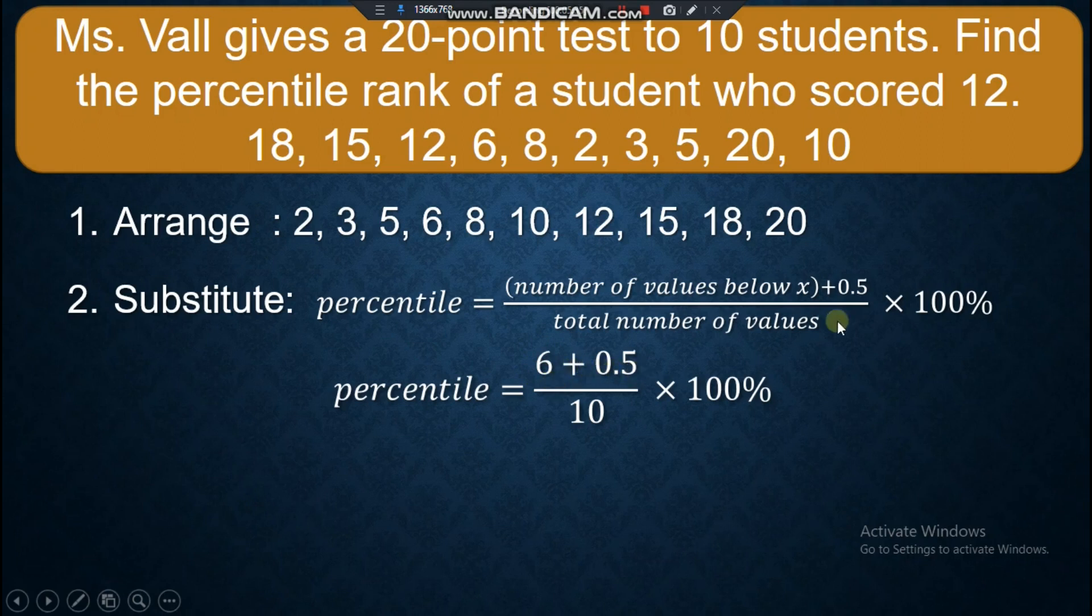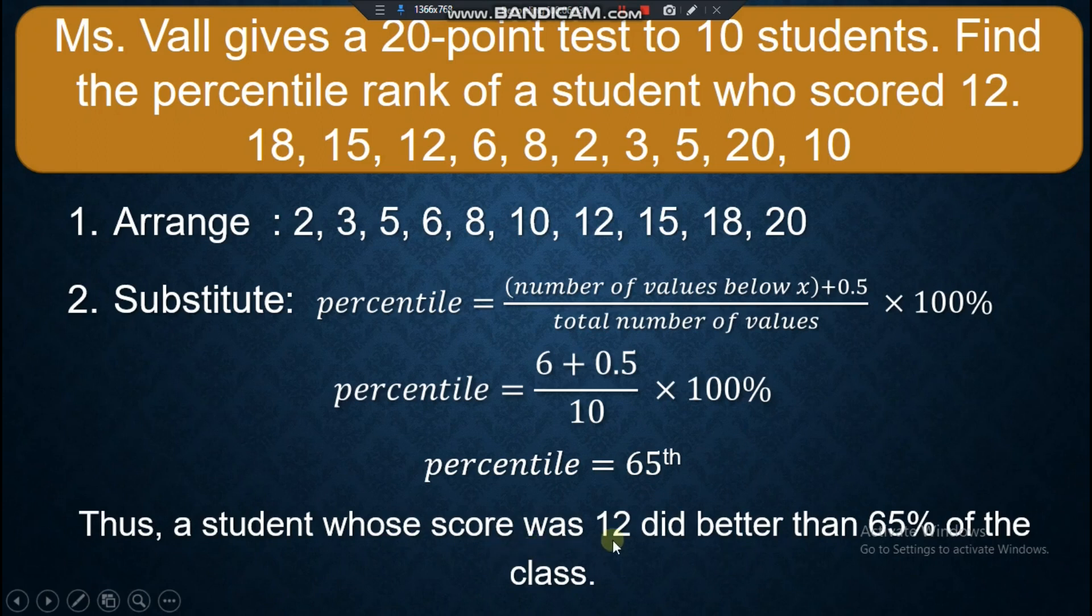Plus 0.5, it is in our equation, all over 10, the total number of values. Times 100%. Percentile now is 65th. The percentile rank of 12 is 65th. Thus, a student whose score was 12 did better than 65% of the class.